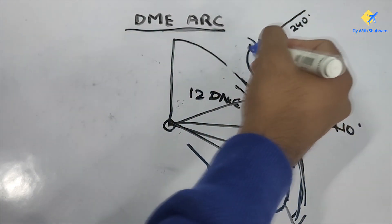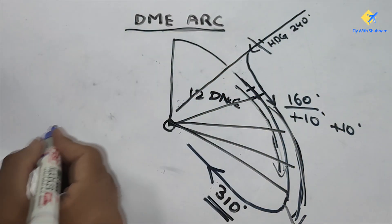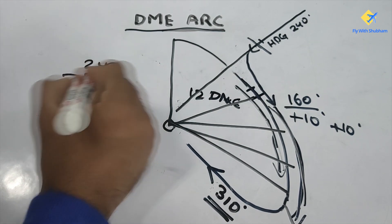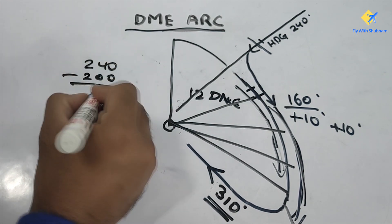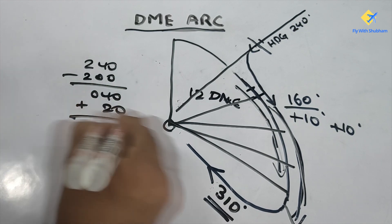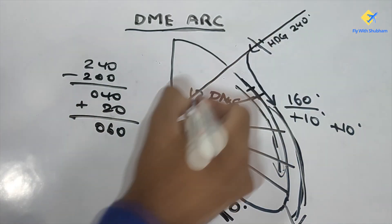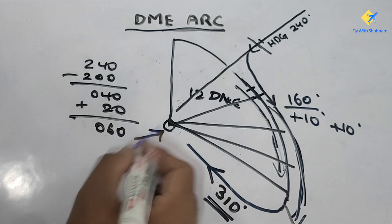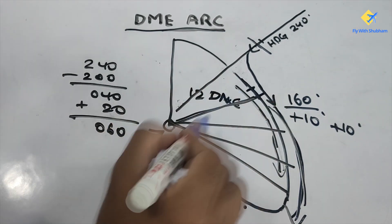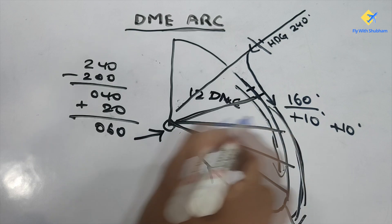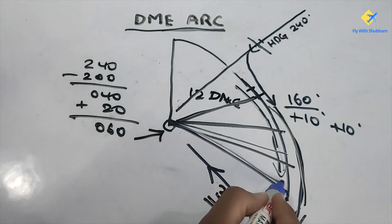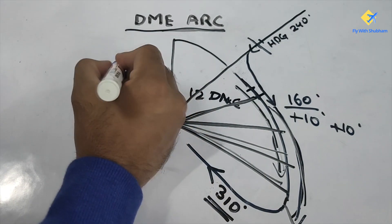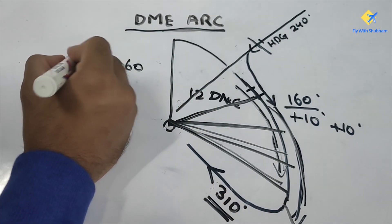Initially, you are coming on a heading of 240 towards the station. That corresponds to a radial of 240 minus 200, which is 040, plus 20, which gives you 060. So you are coming inbound on the 060 radial from the station. The next radial will be 070, then 080, 090, 100 and so on. Initially you are on a course of 060 with a heading of 240.